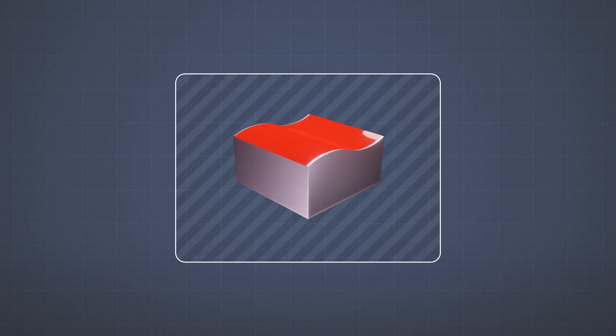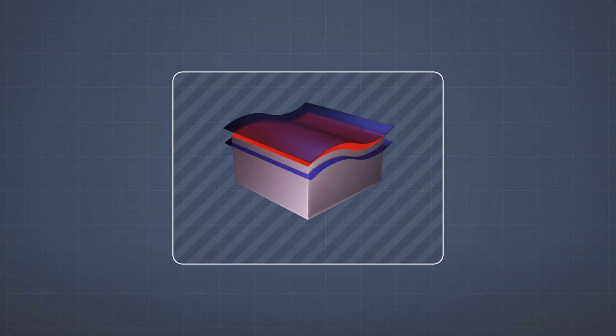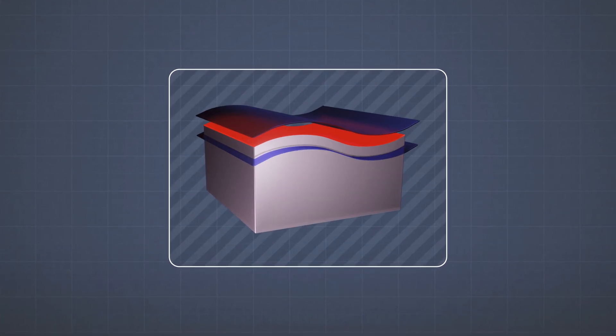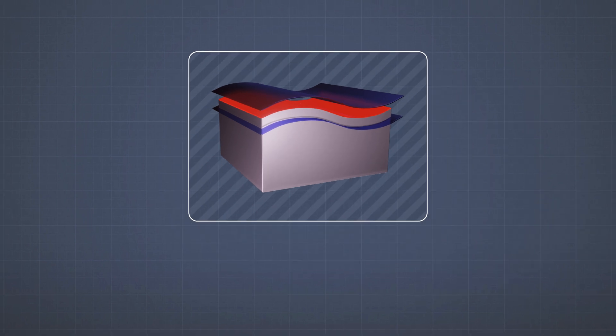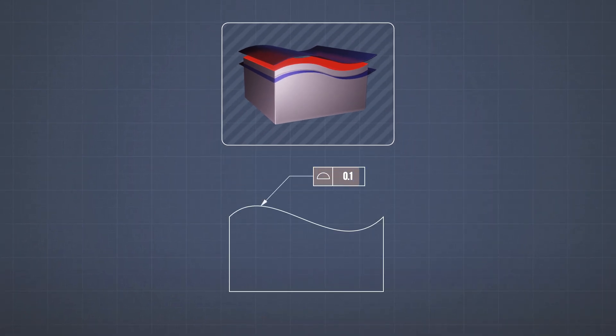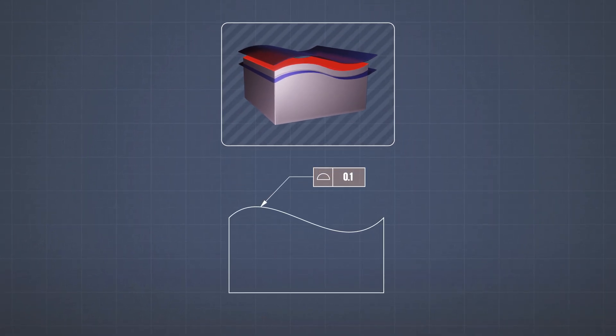So if the part looks like this in 3D, the profile tolerance will mean that there are two surfaces that extend along the whole surface. And any point on the true surface should lie between these two parallel surfaces.